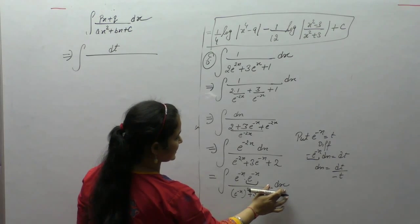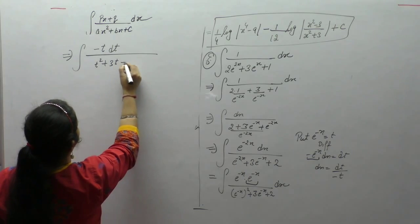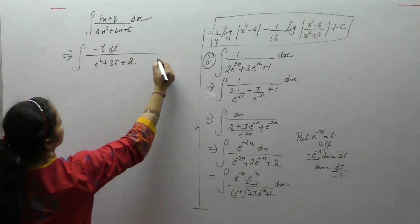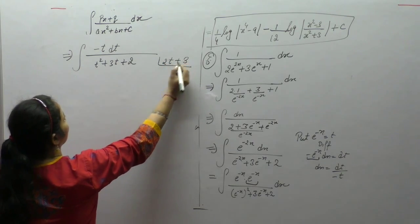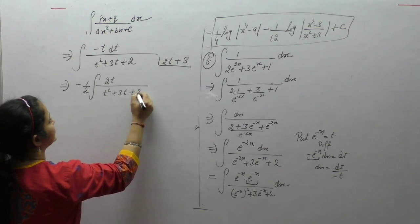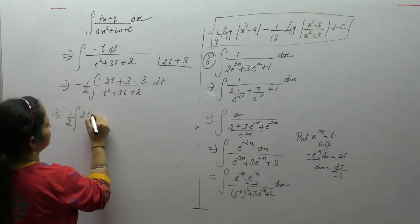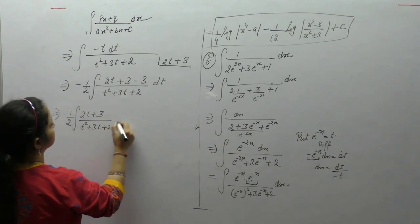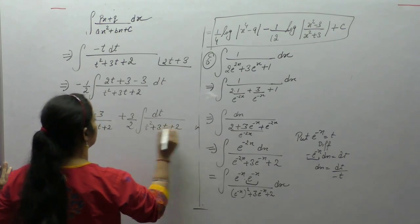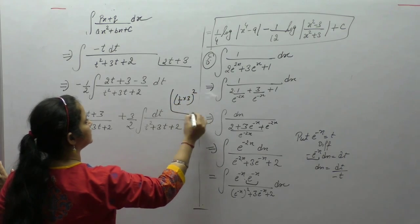We get minus t dt upon t squared plus 3t plus 2, which simplifies to minus t upon t squared plus 3t plus 2. Now complete the derivative: derivative of t squared is 2t and derivative of 3t is 3. Multiply and divide by 2, then add and subtract 3. Take 2t plus 3 as one term and complete the square.